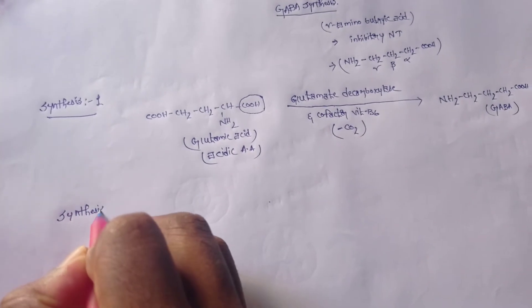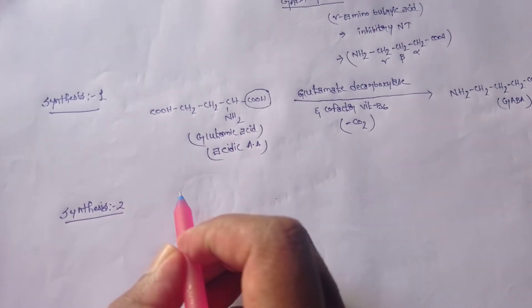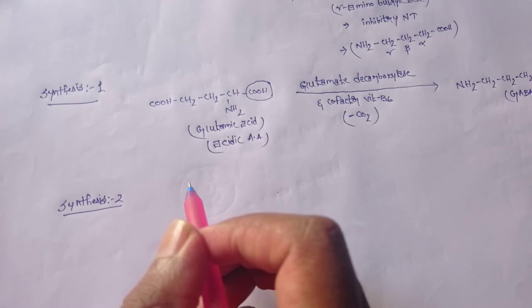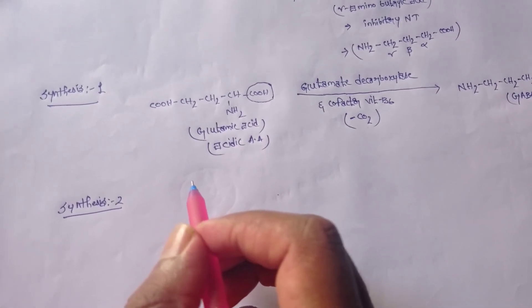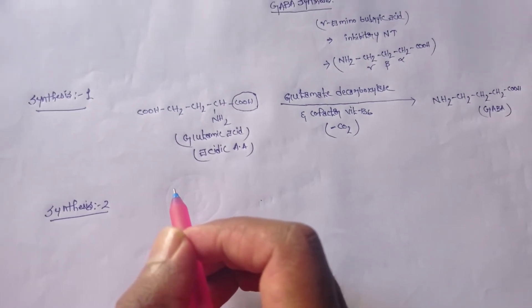Synthesis two: one comma four diaminobutane, also called putrescine. From it, GABA can be synthesized.